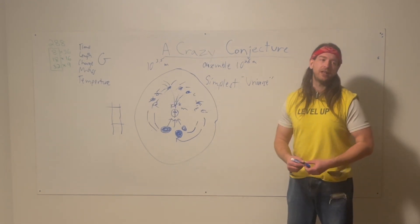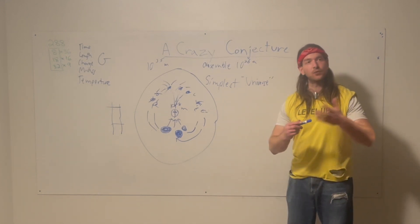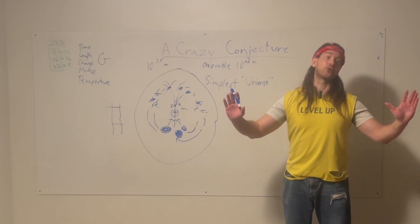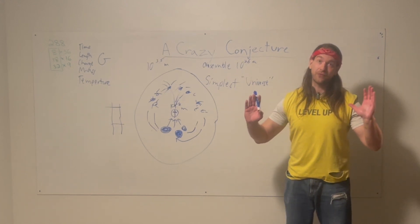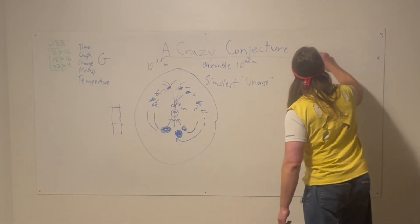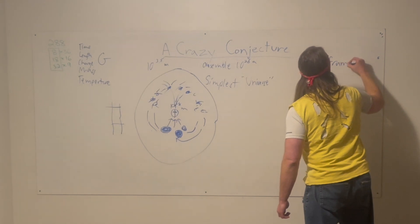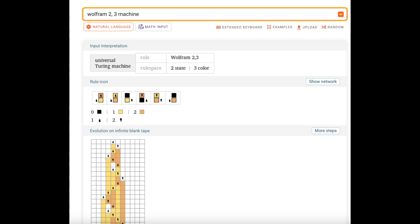So back in 2007, he basically came up with a prize. I think it was like $10,000 or $20,000 to anybody that could prove that it was, in fact, the simplest Turing machine. So we have the Wolfram 2-3 machine.